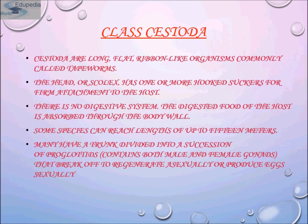The third class is Cestoda. The bodies of cestodes are also known as tapeworms. They have lost the typical turbularian form. Although there are a few segmental species, the bulk of a typical cestode body consists of a series of linearly arranged reproductive segments called proglottids. They are long, flat, ribbon-like organisms commonly called tapeworms.